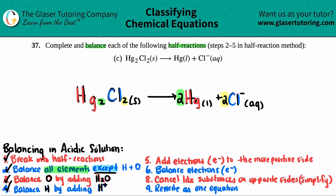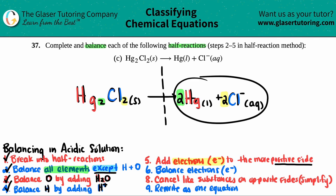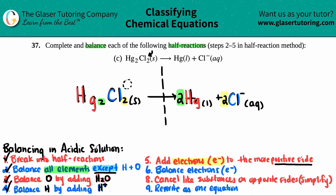We're finally at the last step. We have to add electrons, which is E negative, to the more positive side of the reaction. What I like to do at this step is put a barrier between the reactant side and the product side, just to make sure I'm only taking the charges on the left and only the charges on the right. Now we have to find out what the charges are — it's very simple. You don't have to look for individual charges; all you have to do is look in the upper right-hand corner. For the compound Hg2Cl2, if I look in the upper right-hand corner, they didn't give me a charge, so the charge is zero. I only have one of this whole compound, so one times zero is zero — the overall charge of the left-hand side is zero.